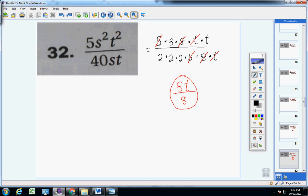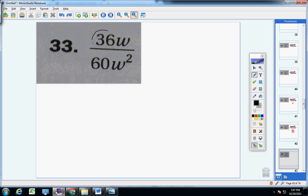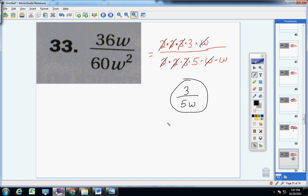Number 33. Prime factors of 36, that would be two, two, three, three, and of course a W. I'm going to start skipping steps and going faster. 60 would be two, two, three, five, and I have two W's, so W, W. All right. Two's cancel out. Three's cancel out. W's cancel out. And you're left with three over five W.